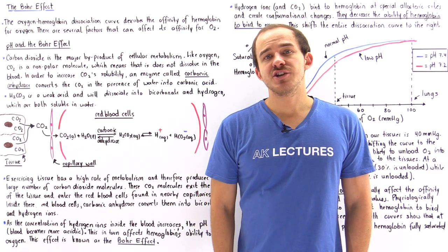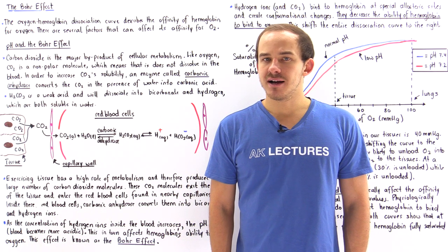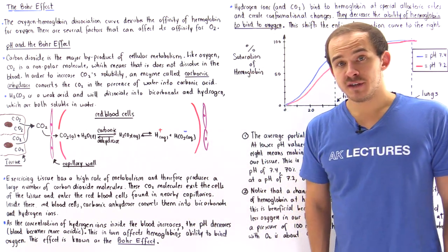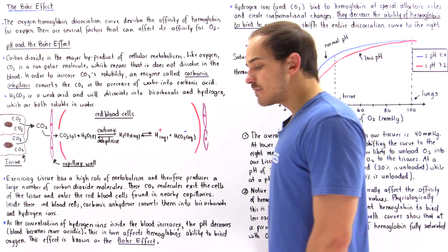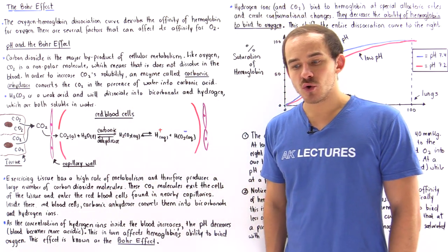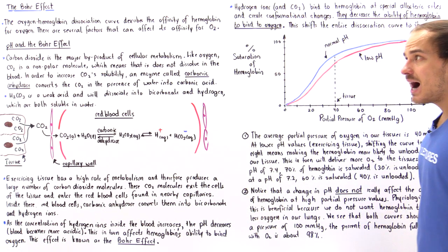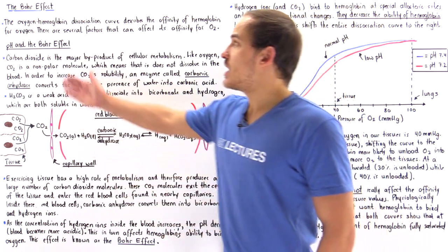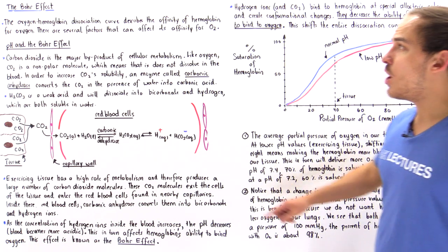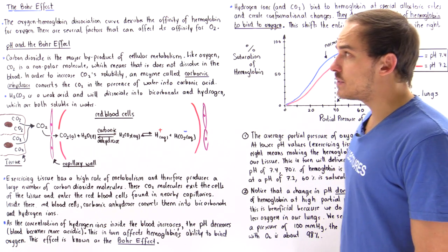The oxygen hemoglobin dissociation curve is a graph that describes the ability of hemoglobin to bind to oxygen at specific partial pressure values. The ability of hemoglobin to bind to oxygen is affected by several important factors, and one of these factors is the pH of our blood. When the pH of our blood changes, hemoglobin's ability to bind to oxygen also changes, and this effect is known as the Bohr effect, named after scientist Christian Bohr.